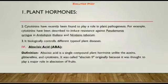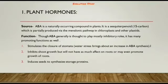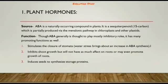Abscisic acid (ABA) is a single compound plant hormone, unlike auxins, gibberellins, and cytokinins. It was originally called abscission 2 because it was thought to play a major role in the abscission of fruits. ABA is a naturally occurring compound in plants — a sesquiterpenoid of 15 carbons — which is partially produced via the mevalonic pathway in the chloroplast and other plastids.